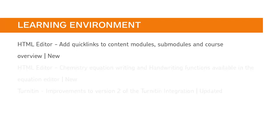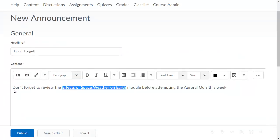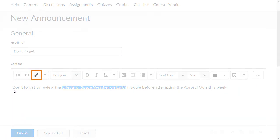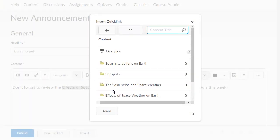Users can now directly link to content modules, submodules, and the course overview directly from the HTML editor. Previously, only a link to content was available in the HTML editor. This feature implements PI items D545, D2033, and D1731. When using the HTML editor, click Insert Quick Link, select Content, and navigate to the desired topic.